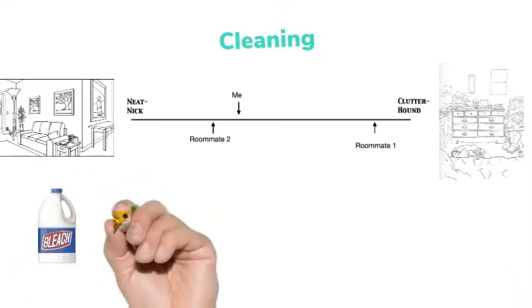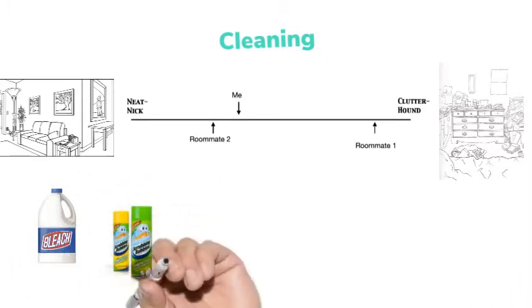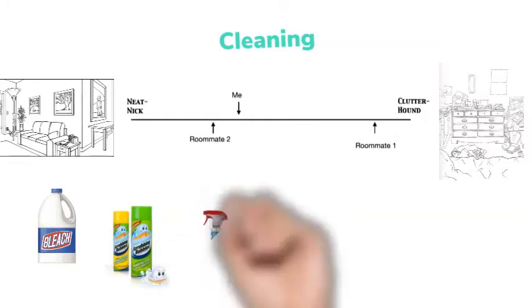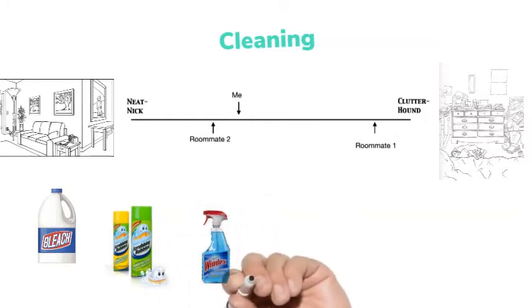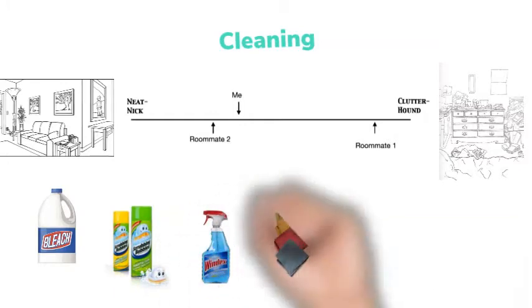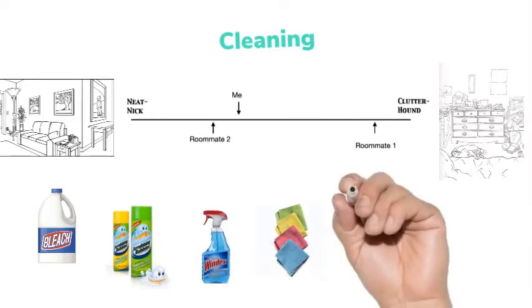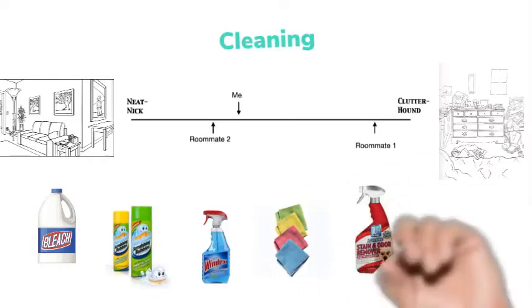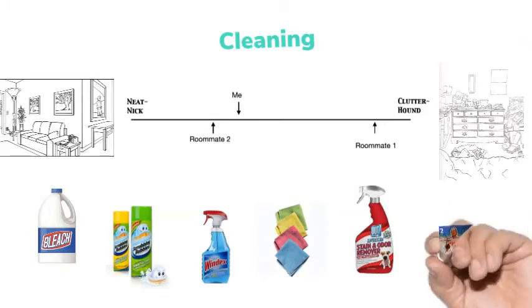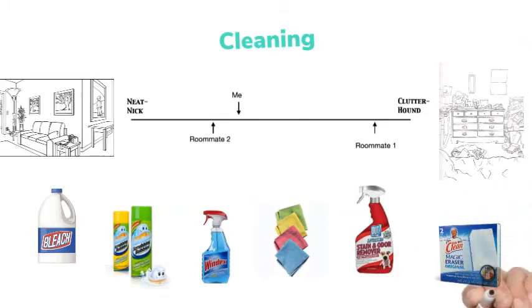And there are some magic products that everybody should know about. And those are bleach, scrubbing bubbles, Windex, microfiber cloths, enzymatic cleaners if there's any pets around, and magic erasers. They work magic in your apartment. So be sure to have some of those on hand.